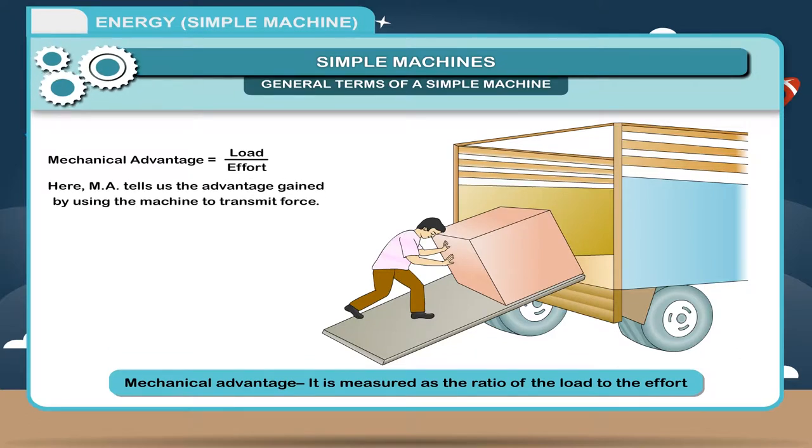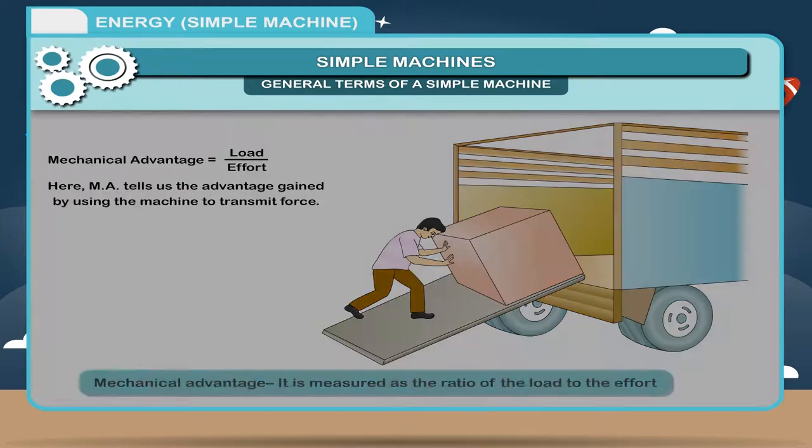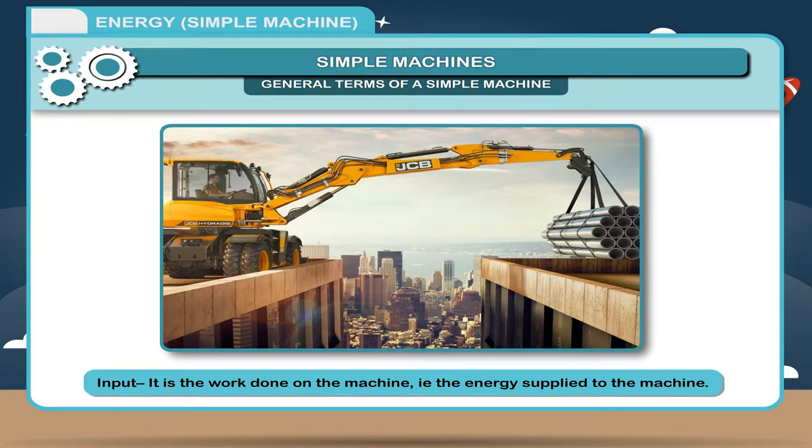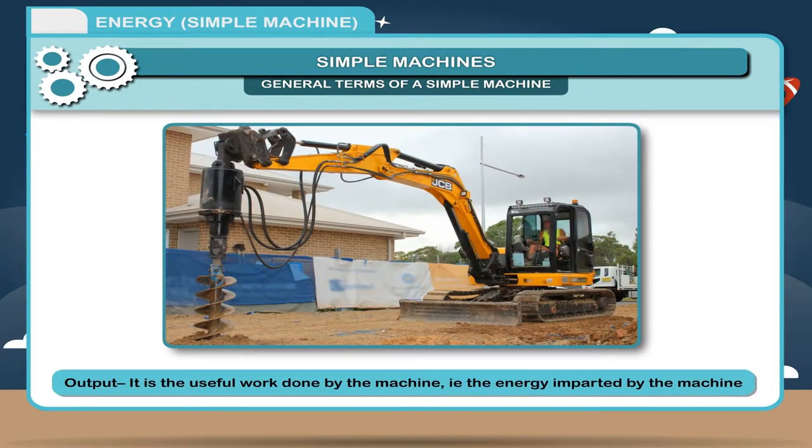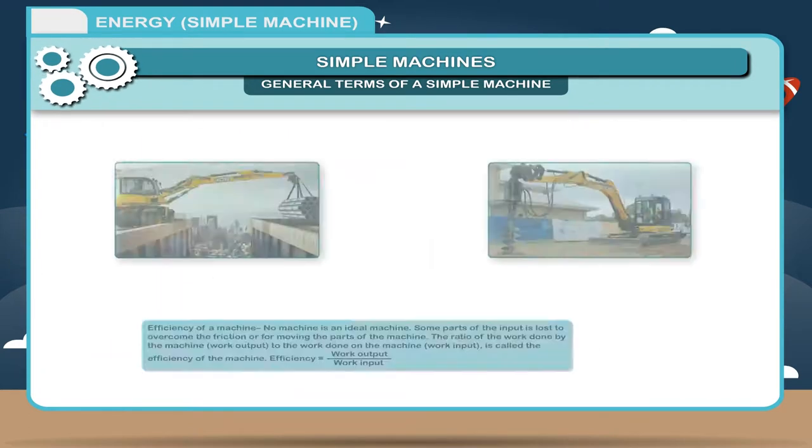Mechanical Advantage tells us the advantage gained by using machine to transmit force. Input: It is the work done on the machine, i.e. the energy supplied to the machine. Output: It is the useful work done by the machine, i.e. the energy imparted by the machine.